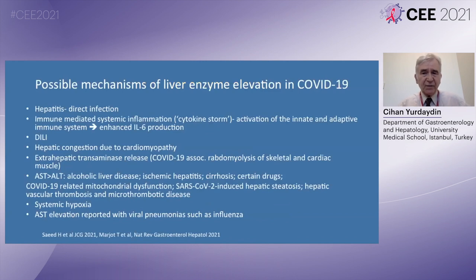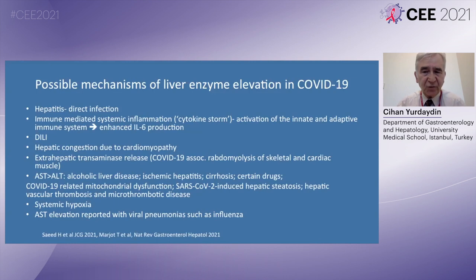Other possible mechanisms of liver enzyme elevations include immune-mediated systemic inflammation, the so-called bystander hepatitis, which can be in the form of a cytokine storm and leads to activation of the innate and adaptive immune system and enhanced IL-6 production. Drug-induced liver injury is also a possibility.